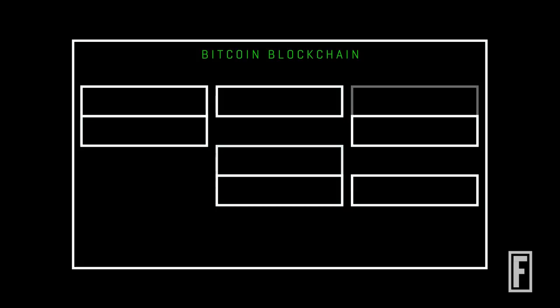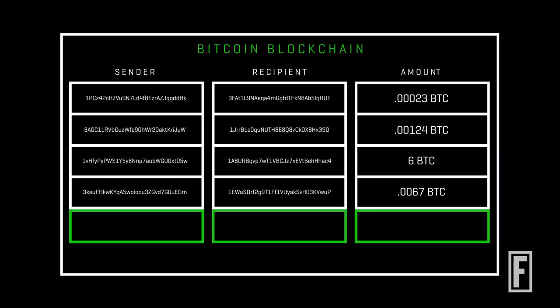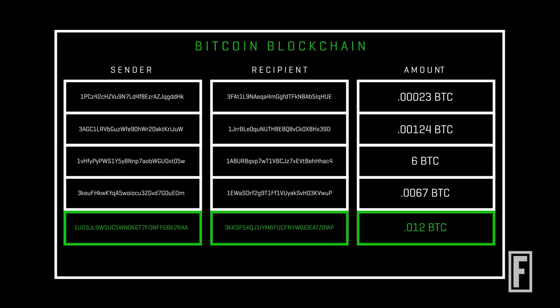Blockchain is like an Excel spreadsheet that anyone in the world can add information into. You have three columns: the sender's address, the recipient's address, and how much money they're sending. Whenever you want to make a transaction, you append a new row that says this address will send this much of its money to this other address.